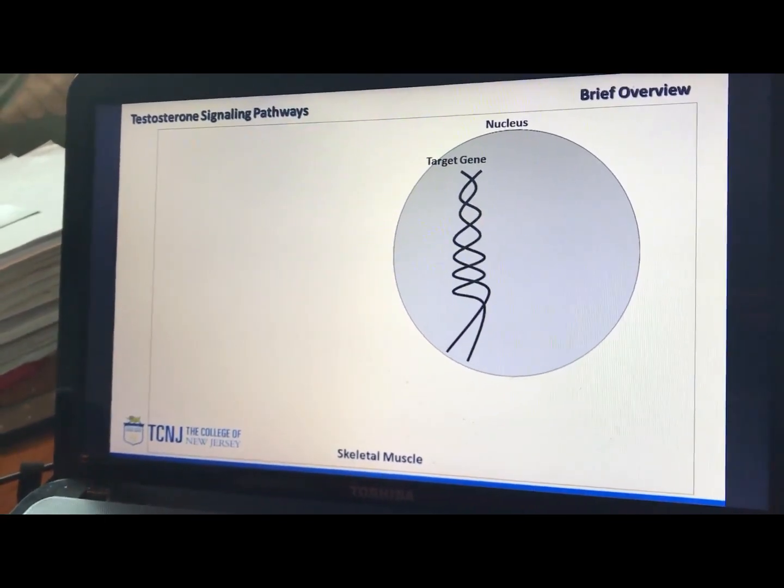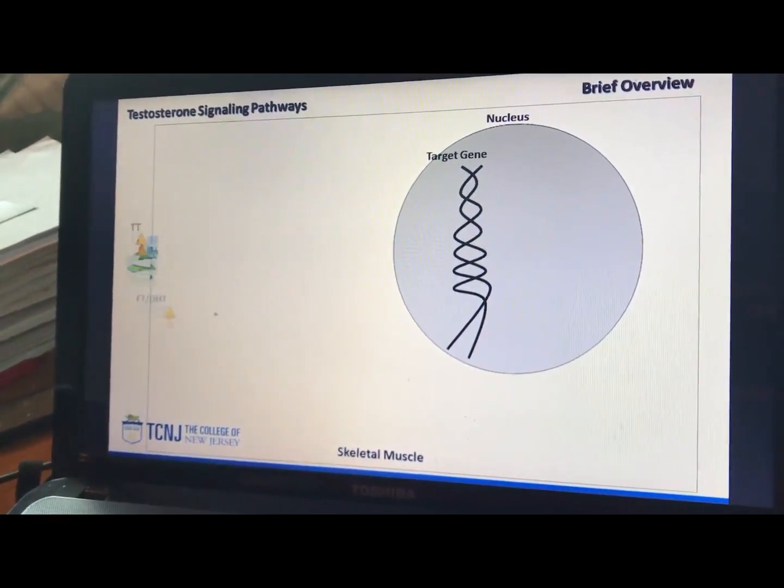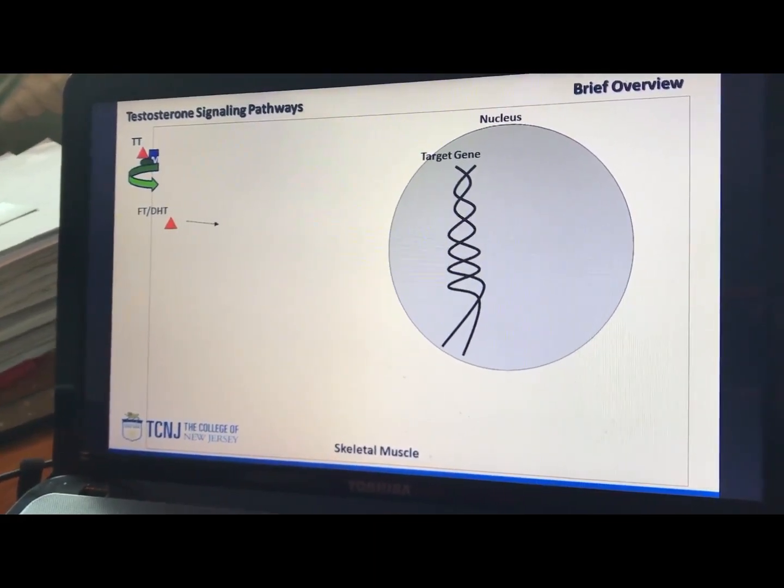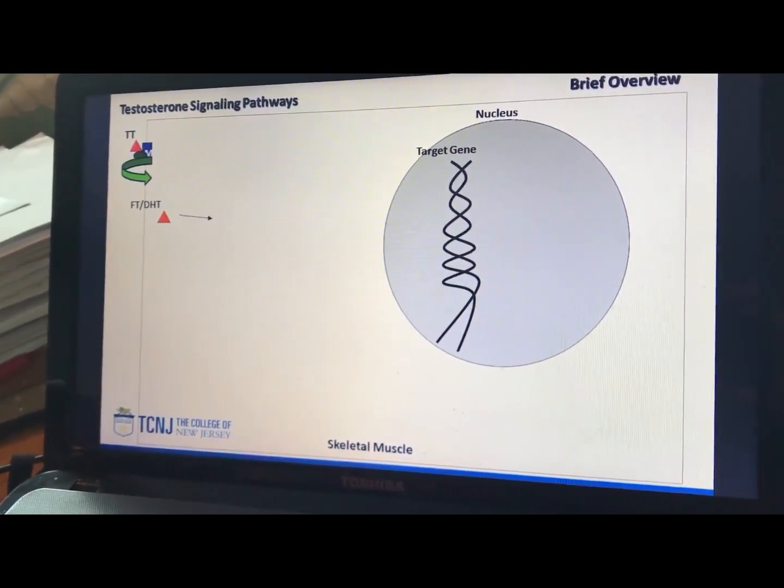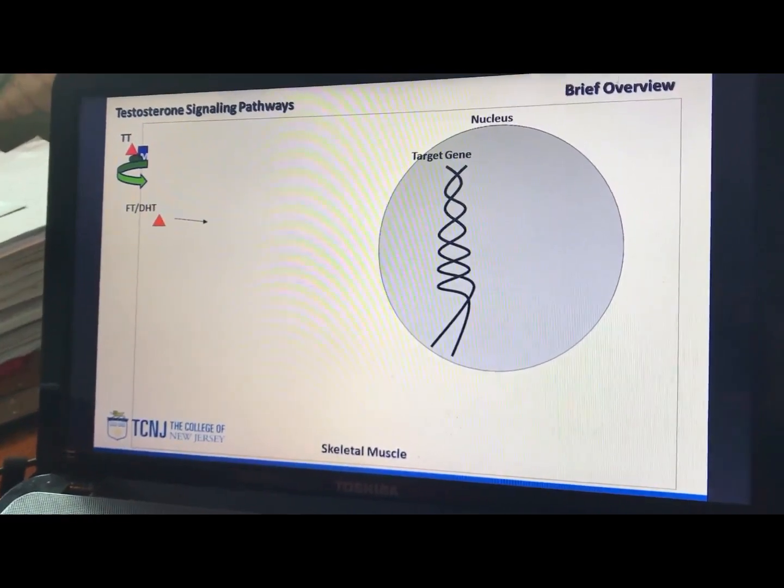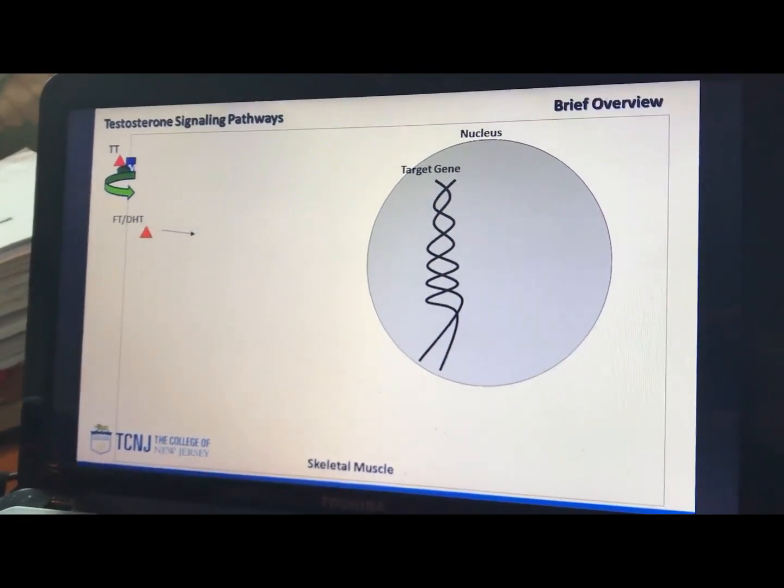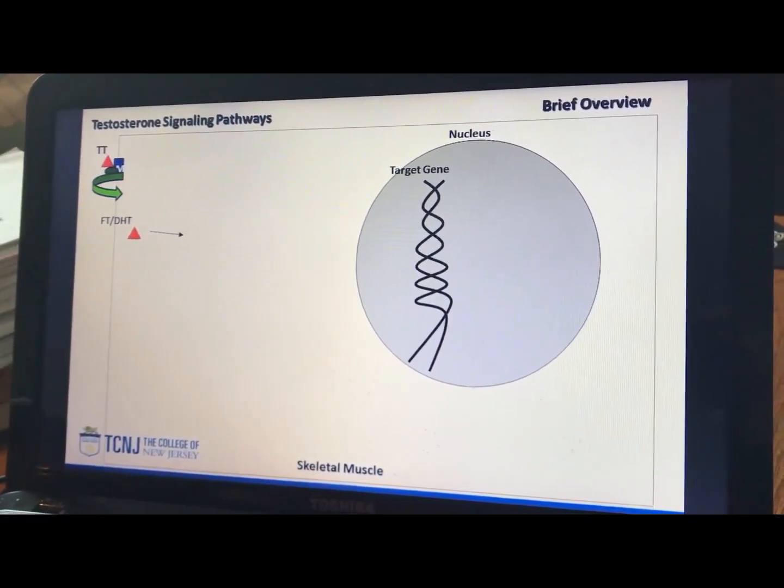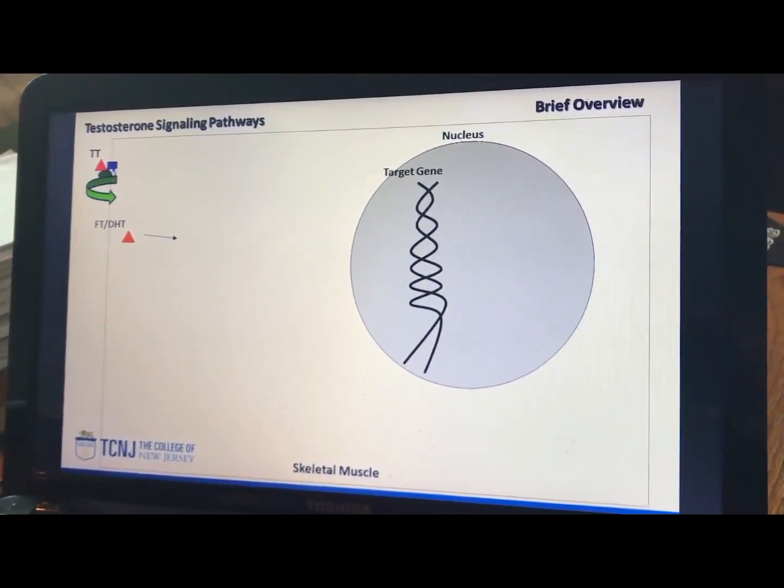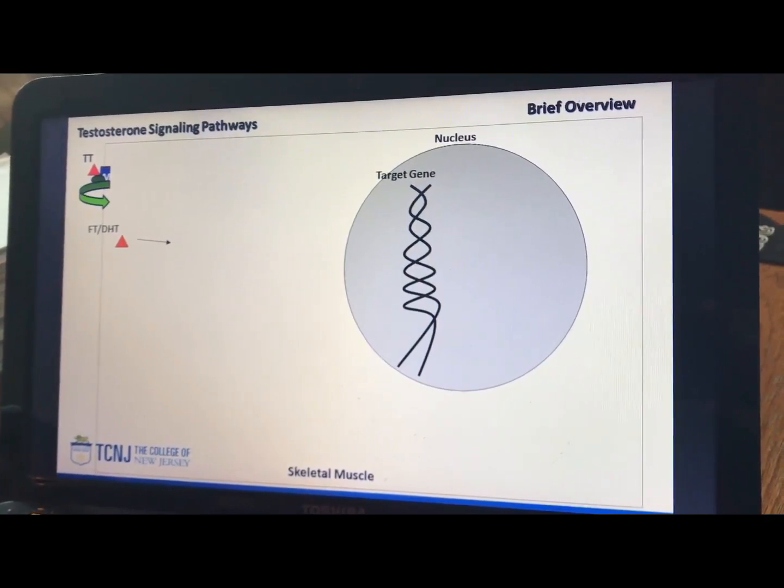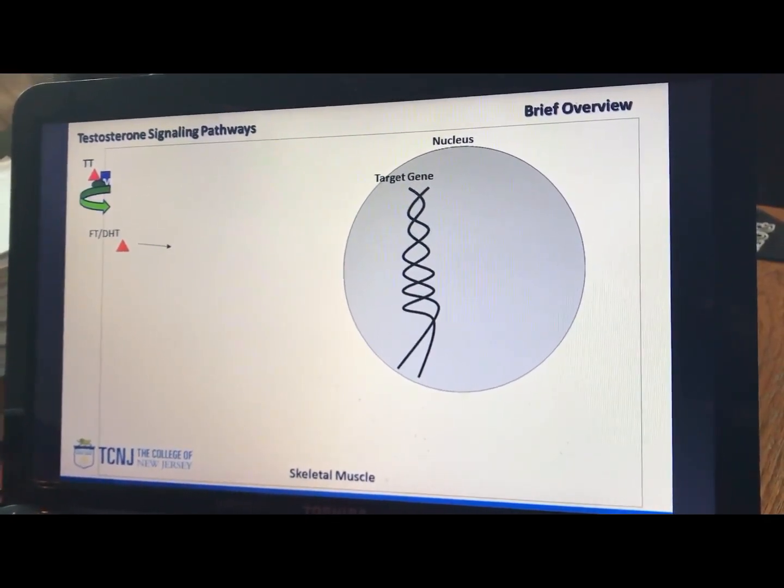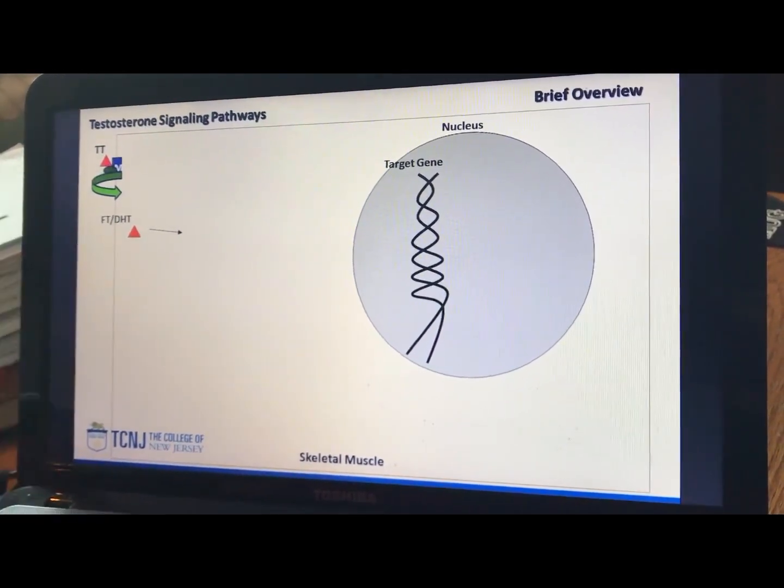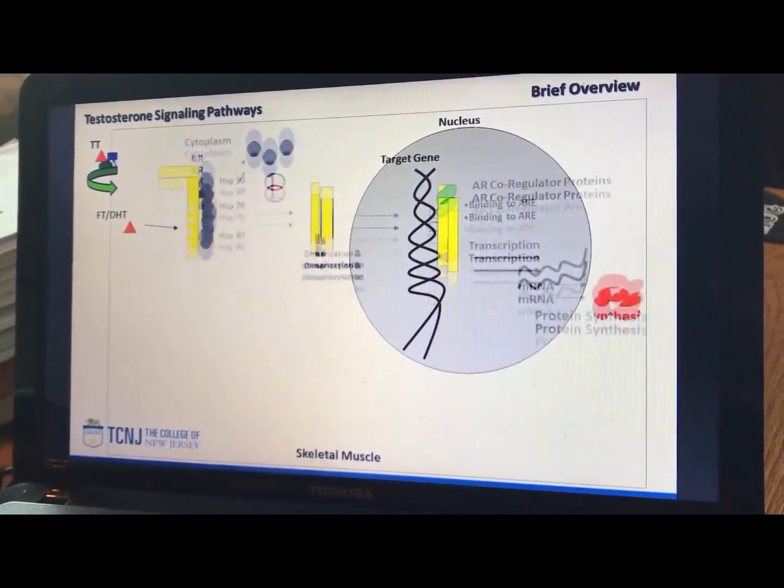All right. So now here you have your skeletal muscle cell. Back in the day, it was thought that you had to be free testosterone or free DHT to enter through the cell membrane to get inside a skeletal muscle fiber. Well, there's proteins now, for example, megalin is one that has been shown to internalize T bound to SHBG. So now they don't even have to be dissociated. The whole complex might be internalized. So that's one thing, right? But number one here, you have genomic signaling.